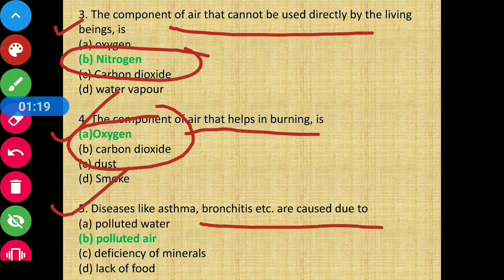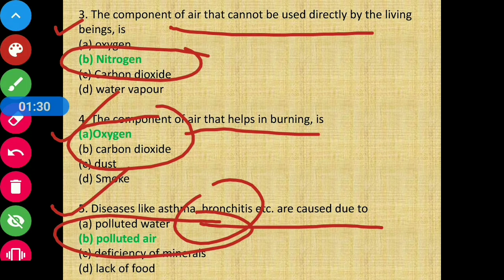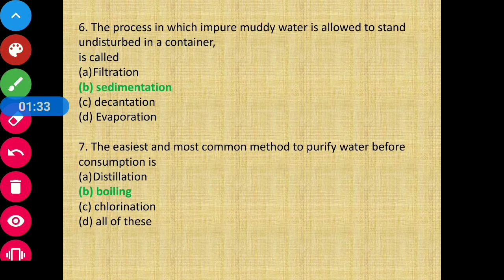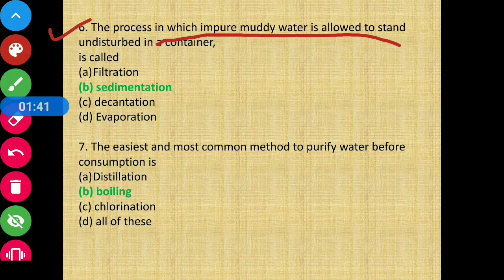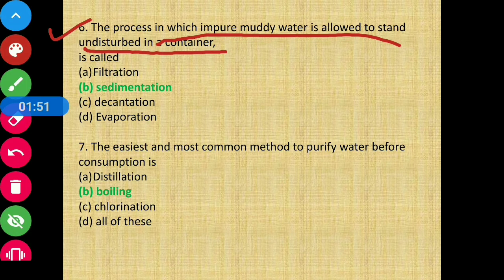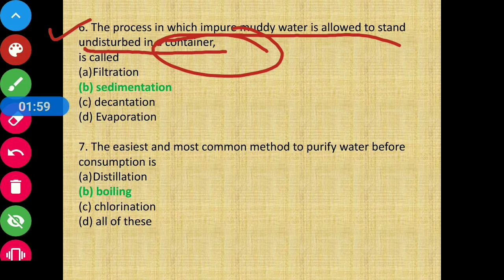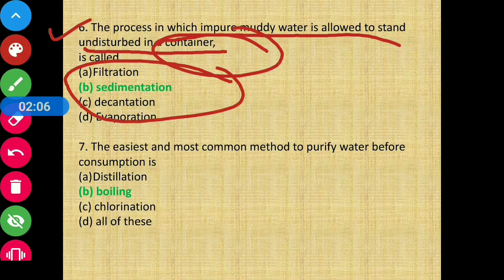Question number 5 — diseases like asthma, bronchitis, etc. are caused due to polluted air. Option B is the correct answer. Next, question number 6 — the process in which impure muddy water is allowed to stand undisturbed in a container so that impurities settle at the bottom — that process is called sedimentation. Option B is the correct answer.